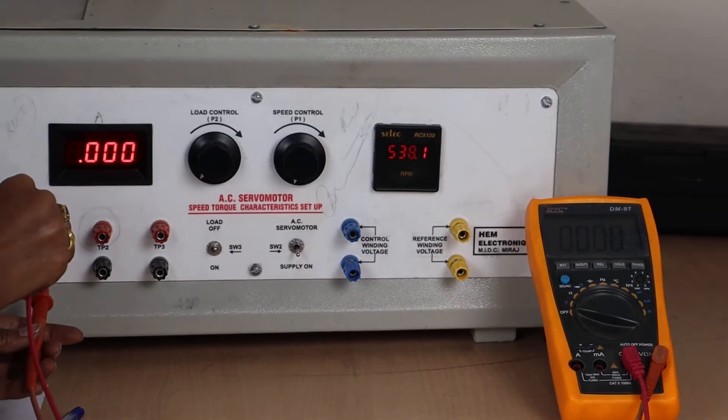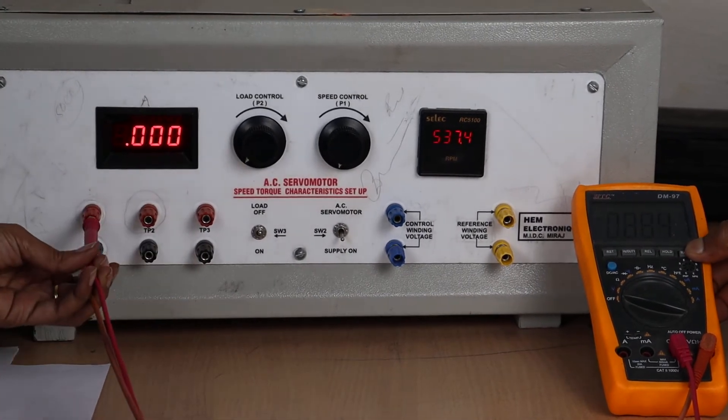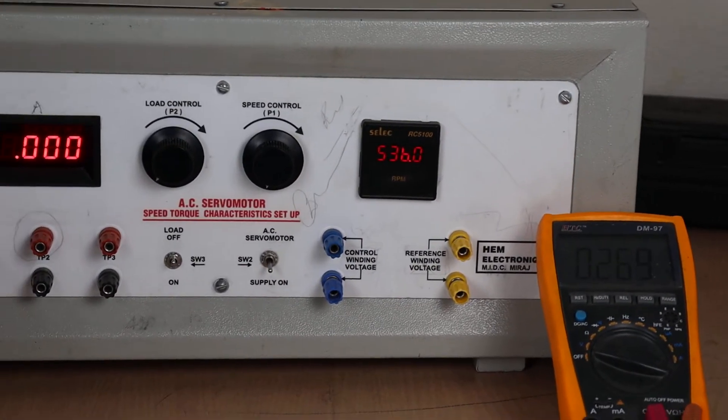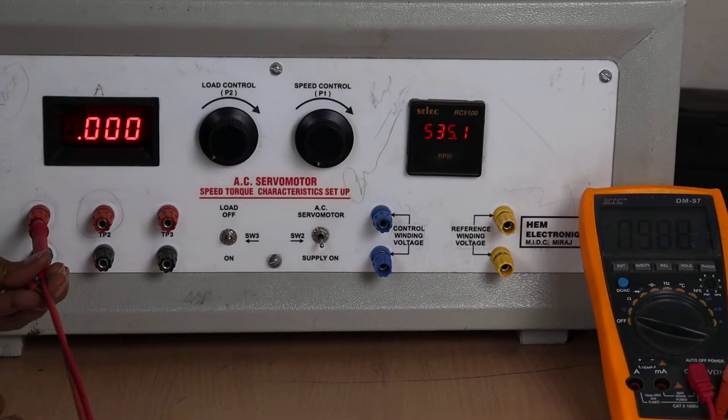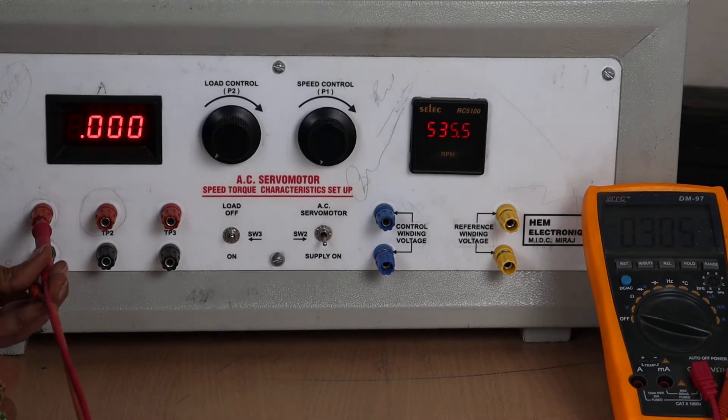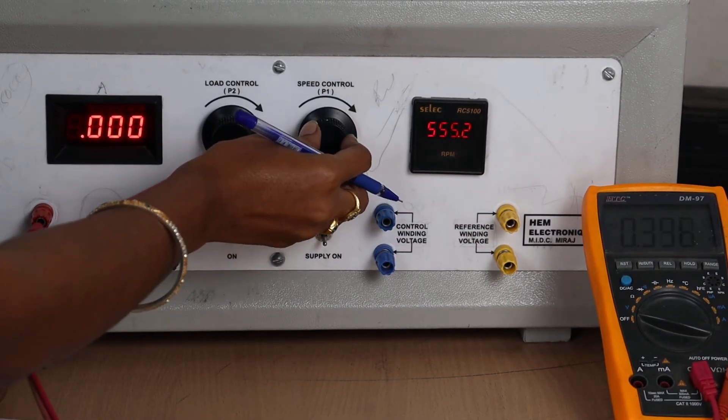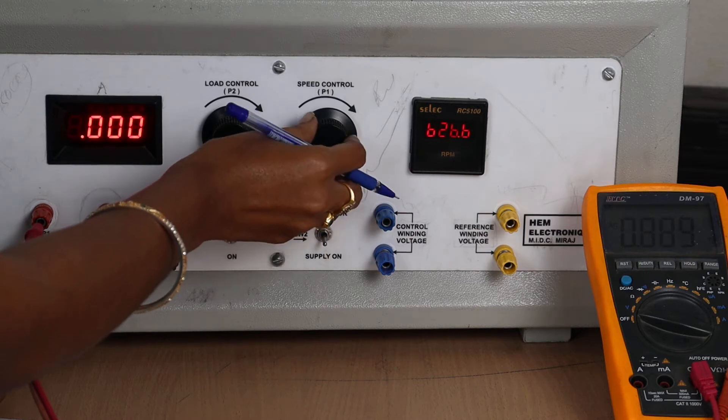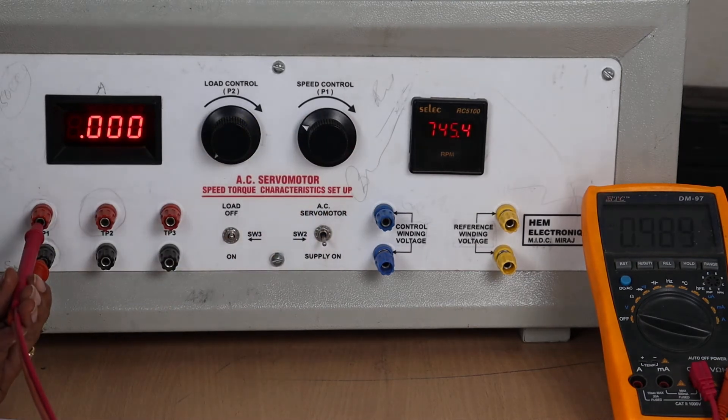So this is the table speed versus EB characteristics. Serial number 1, speed is 540 rpm. Now by using this multimeter I am measuring the value of back EMF. We can get less value of back EMF for this AC servo motor, that is 0.2. It is varying so I am taking it as 0.2. Now I am increasing the speed value by using this P1 point. 745.